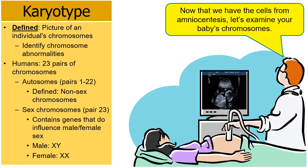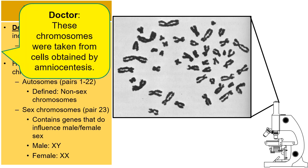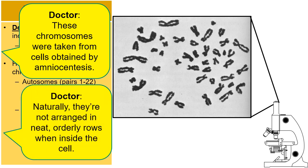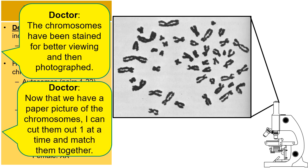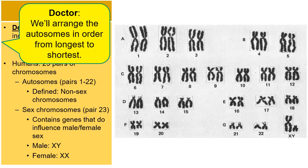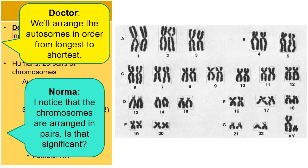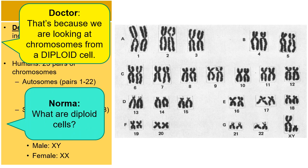Back to the story: now that we have cells from amniocentesis, let's examine the baby's chromosomes. Here are the chromosomes underneath the microscope — taken from cells obtained by amniocentesis. They were stained for better viewing and photographed. We can cut them out one at a time and match them together, arranging the autosomes in order from longest to shortest. Norma notices the chromosomes are arranged in pairs and asks if that's significant. The doctor explains that we are looking at chromosomes from a diploid cell. Norma asks: what are diploid cells?